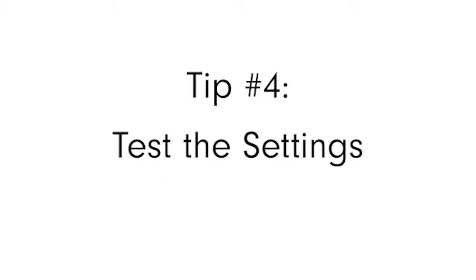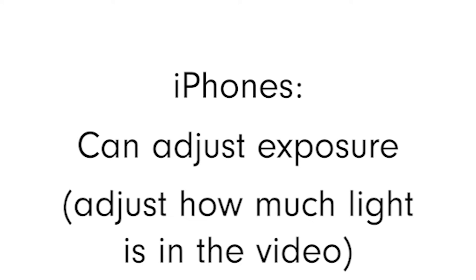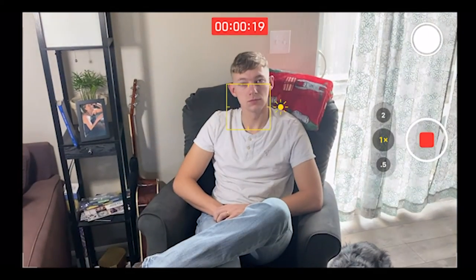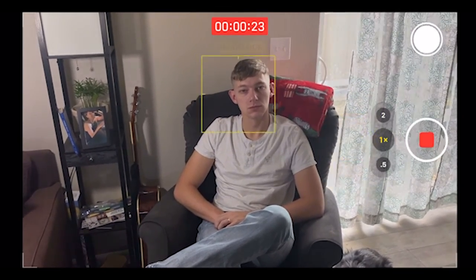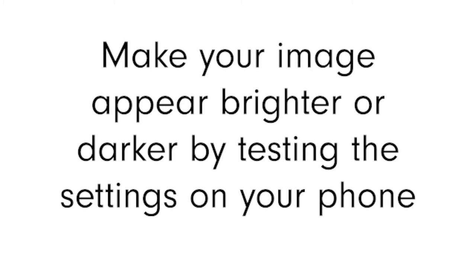Tip number four: test the settings. iPhones and smartphones may not be the best video cameras out there, but they can do a lot more than people think. Your phone can change the exposure settings for your video. If it's too dark or too light in your area, you can change the exposure by tapping on the screen until a yellow box with the sun next to it appears. From there, if you slide your finger up and down, you'll see the sun icon move up and down. By sliding the sun up, you can make the exposure brighter, lightening your video, and vice versa for sliding down to darken your exposure and make your video darker.